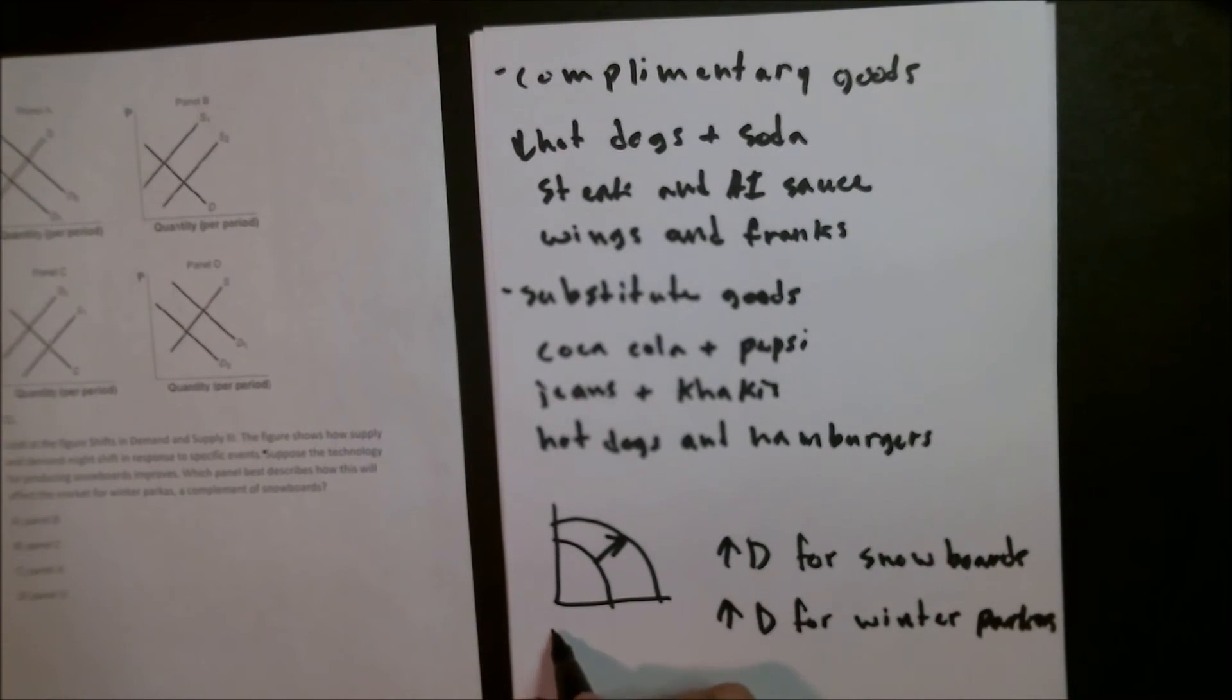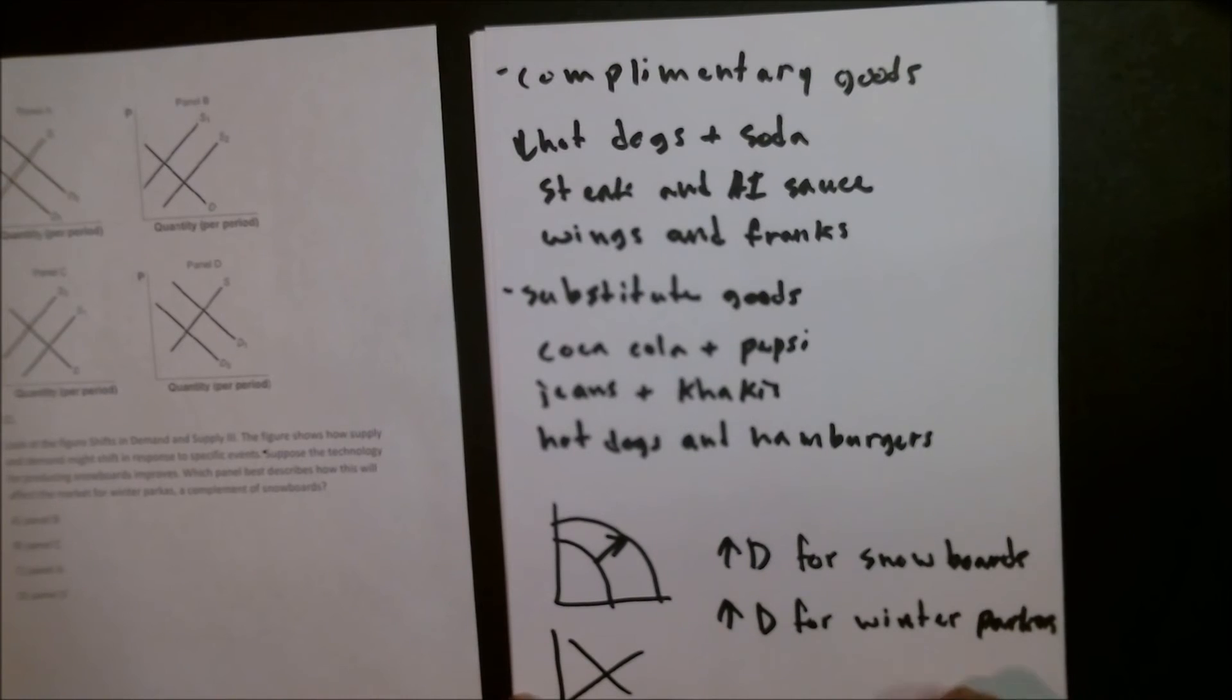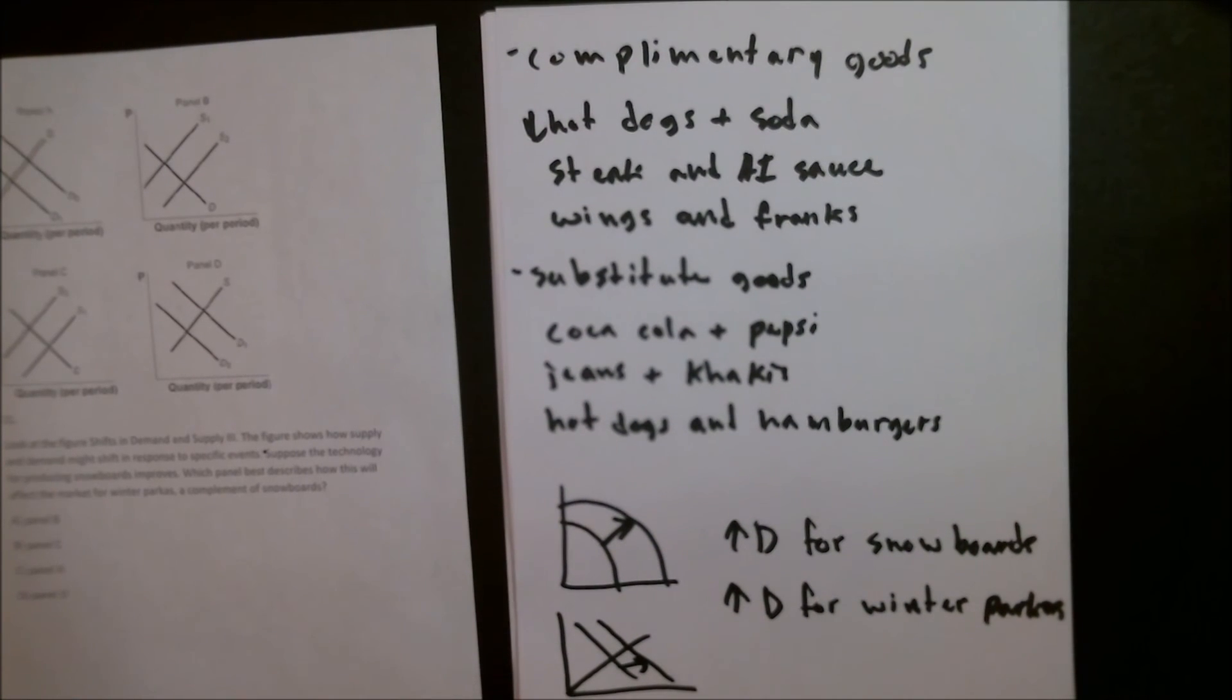We can see that in a graph because here we're going to have our supply and our demand. Now we know the supply has not changed in this case because it does not tell us that there's been any advancement to the production of parkas, only snowboards. So we know the supply hasn't changed, but we know the demand has to increase because we now have an increase in snowboards. The only way to do that without touching the supply is to bubble out the new demand line to represent that it has been increased.